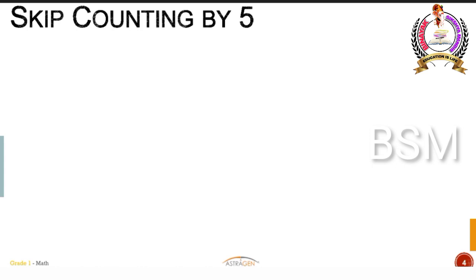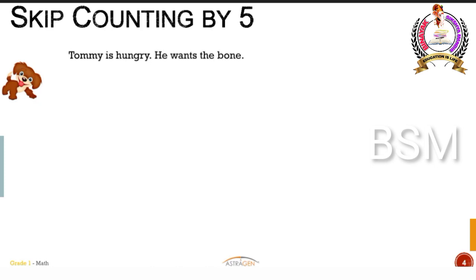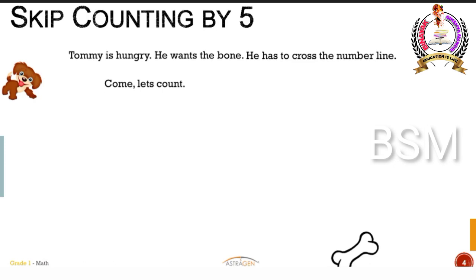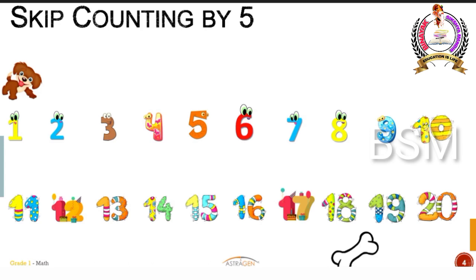Excellent! Now, whom do we have here? You little Tommy! Tommy seems hungry — did you see him licking his lips? He's running to fetch the bone. Dogs just can't stop themselves; they want to eat the bones immediately. Tommy is somewhere and the bone is somewhere else. He has many numbers and has to cross a long number line. He doesn't want to skip by 2 because he thinks that will make his wait longer. So he decided he will skip count by 5 — leave away 4 numbers and land on the 5th.